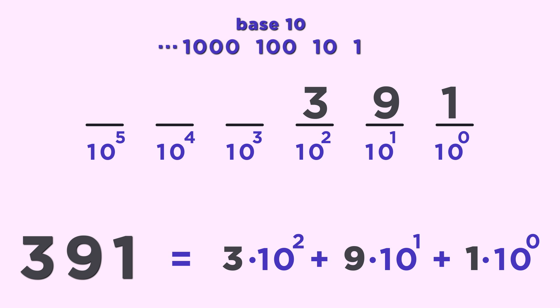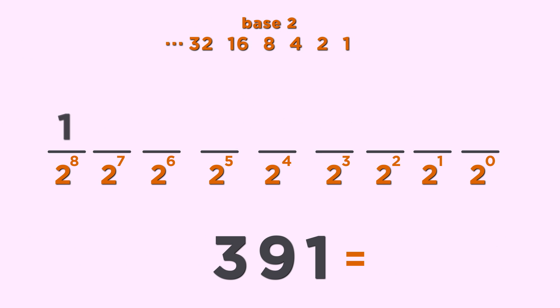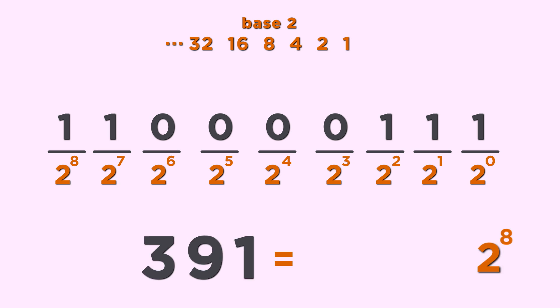But the same number written in base 2 is 110000111, which means it's 2 to the 8th plus 2 to the 7th plus 2 squared plus 2 to the 1st plus 2 to the 0.